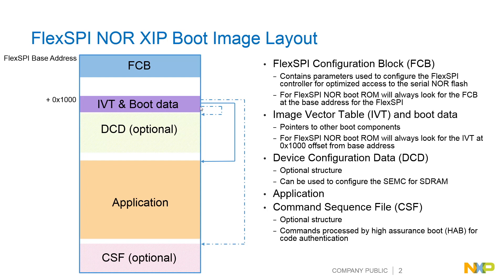Your IVT can have pointers to optional components such as your DCD — this is a device configuration data structure. This is optional and you can use it for configuring SDRAM interfaces over the SEMC controller on RT devices. You can also have pointers to an optional CSF block within your IVT. This is your command sequence file, which is an optional structure used when booting authenticated code using the ROM's HAB functionality. The required pointer you need in your IVT and boot data is your pointer to your actual application, as shown here.